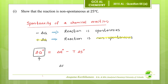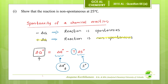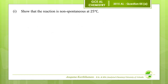Standard enthalpy changes of formation of the reactants and products, as well as standard entropies of the reactants and products, are given in this question. From the standard enthalpy changes of formation, we can calculate the standard enthalpy change of the reaction. From the standard entropies, we can calculate the standard entropy change. Temperature is also given, so we can calculate ΔG°.